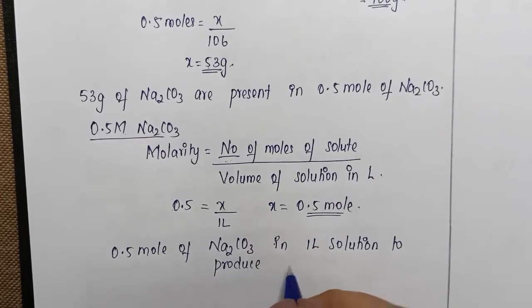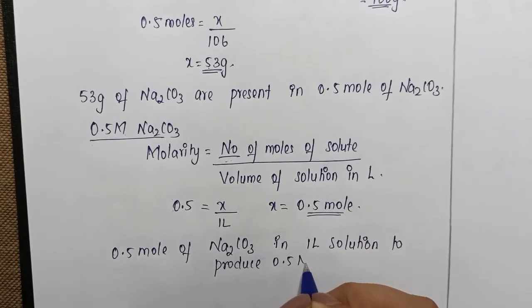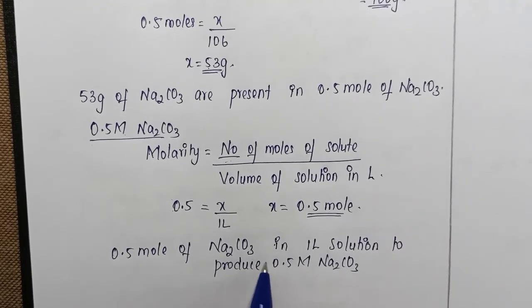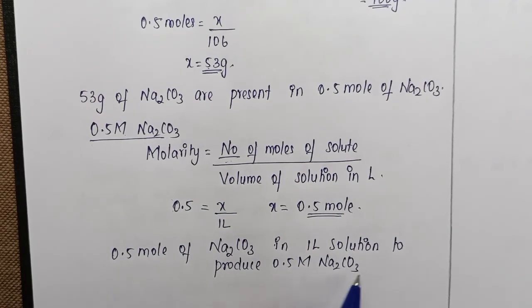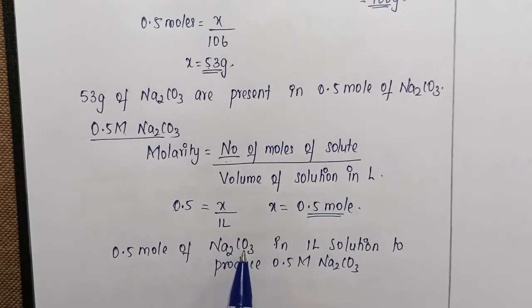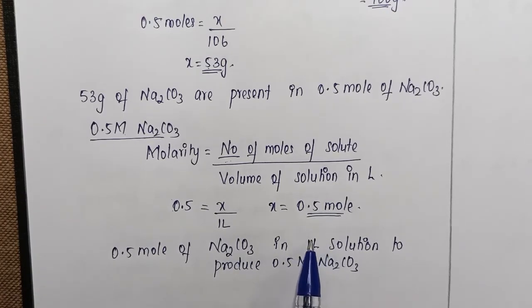To produce 0.5 molar Na2CO3. In lab, if I'm asking you to prepare 0.5 molar solution of Na2CO3, I have to take 0.5 mole of Na2CO3, dissolve it in one liter solution. Only then I will get 0.5 molar.